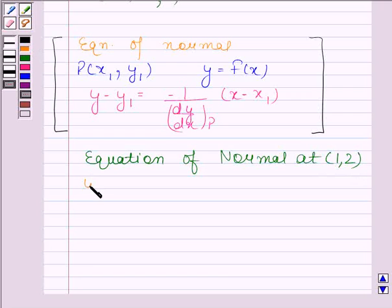y minus 2 equals minus 1 divided by dy/dx at the point (1, 2), times (x minus 1).